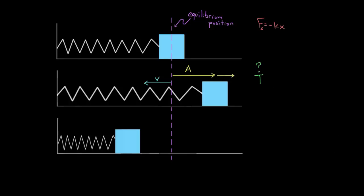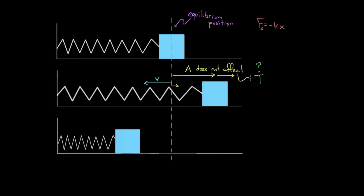This is a bit surprising, but something you need to remember: changes in amplitude do not affect the period at all. Pull this mass back just a little — it oscillates with a certain period, say three seconds. Pull it back much farther — it still oscillates with three seconds. It has farther to travel, but it travels faster, and the amplitude does not affect the period for a mass oscillating on a spring.